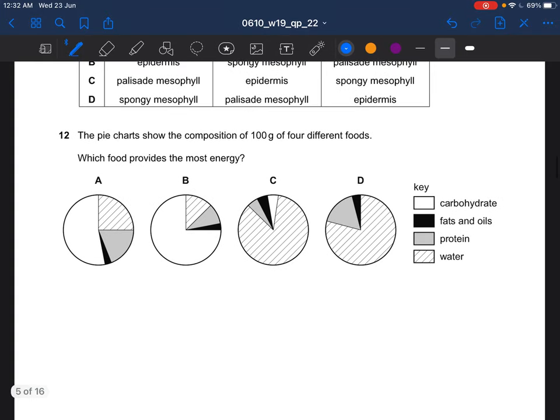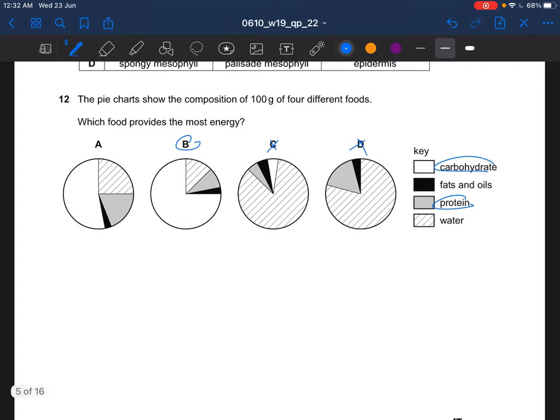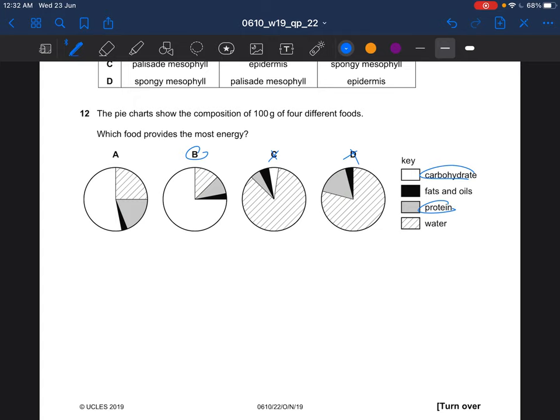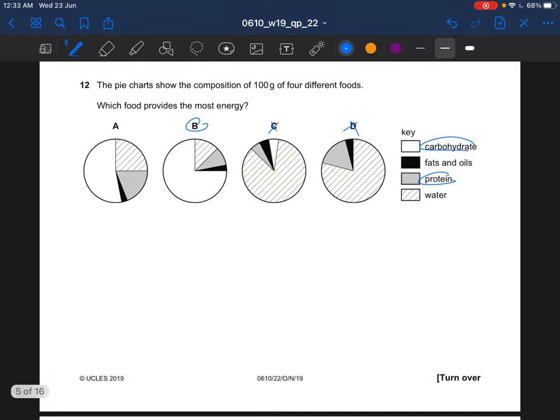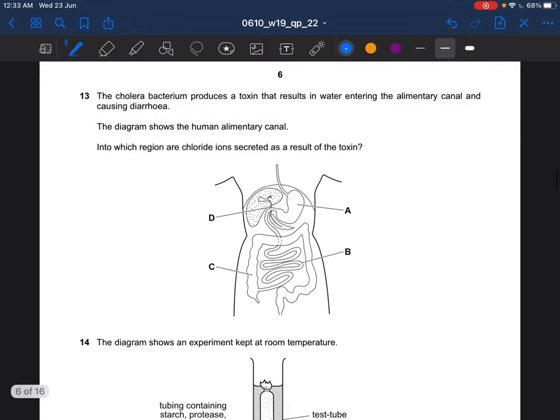Next question. The pie charts show the composition of 100g of 4 different foods. Which food provides the most energy? It would have a high proportion, a greater fraction of carbohydrate and protein. So the answer would be B. It definitely can't be C or D, water doesn't provide the most energy. So the answer would be B, it has the highest portion of carbohydrate and protein and also the least water.